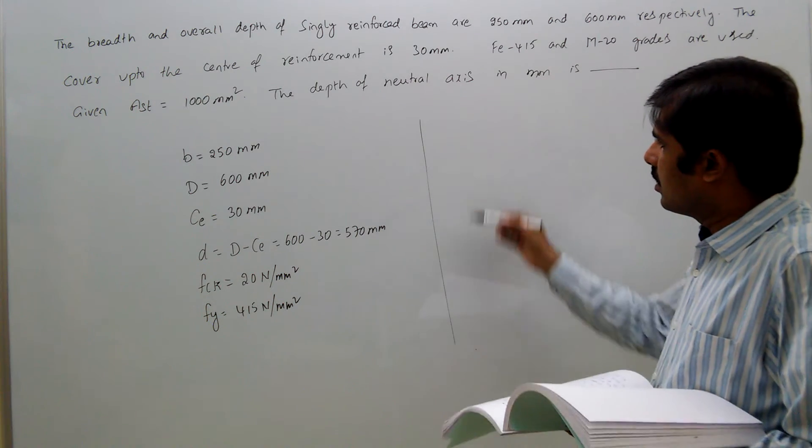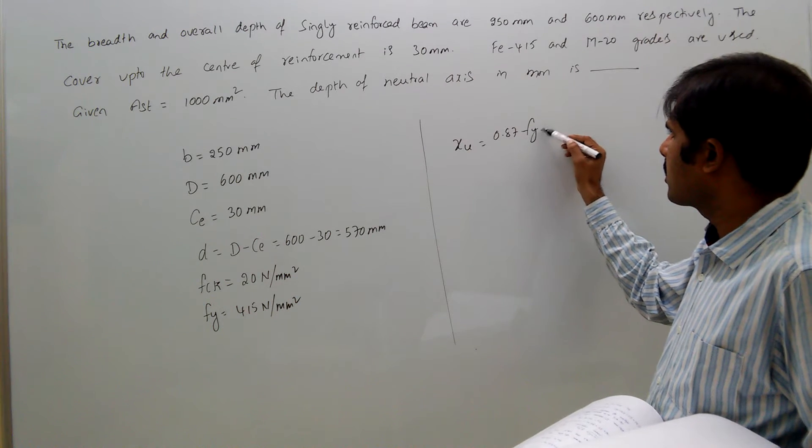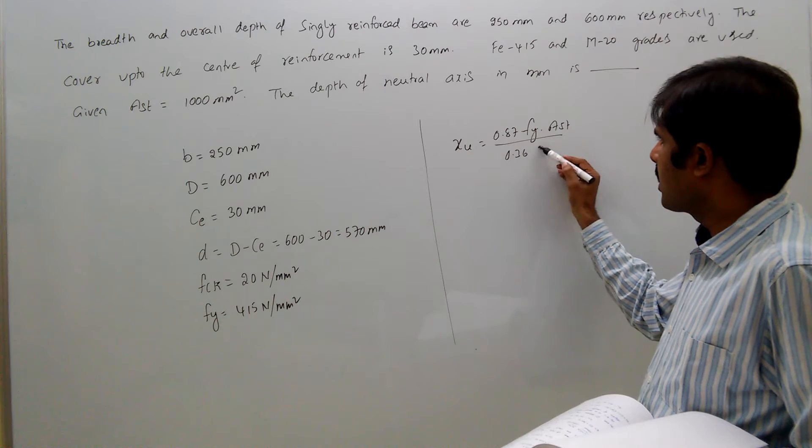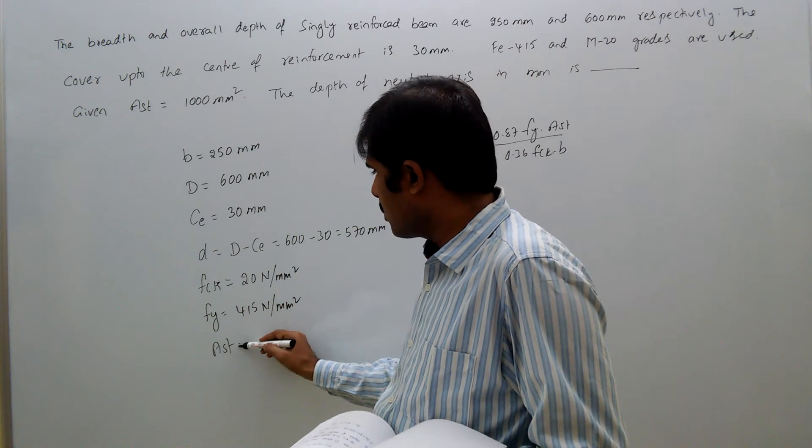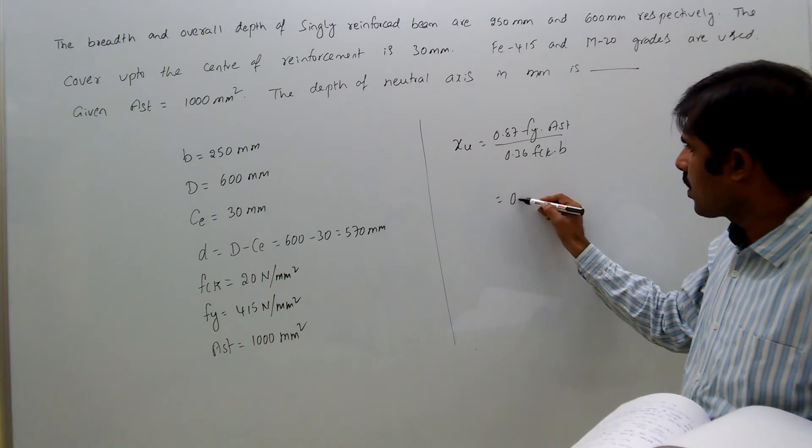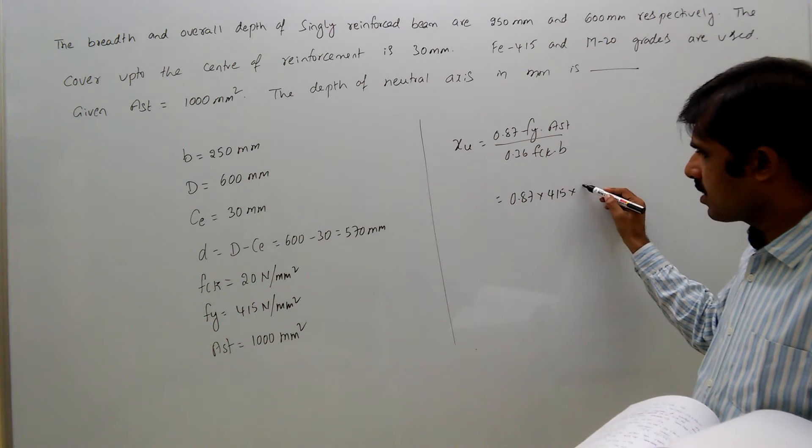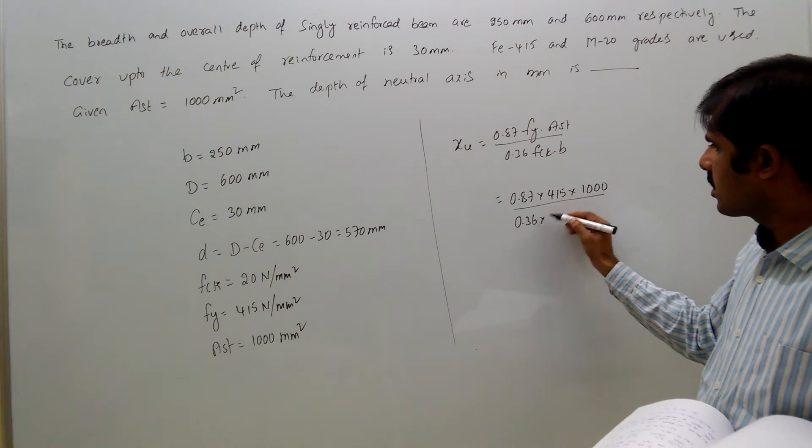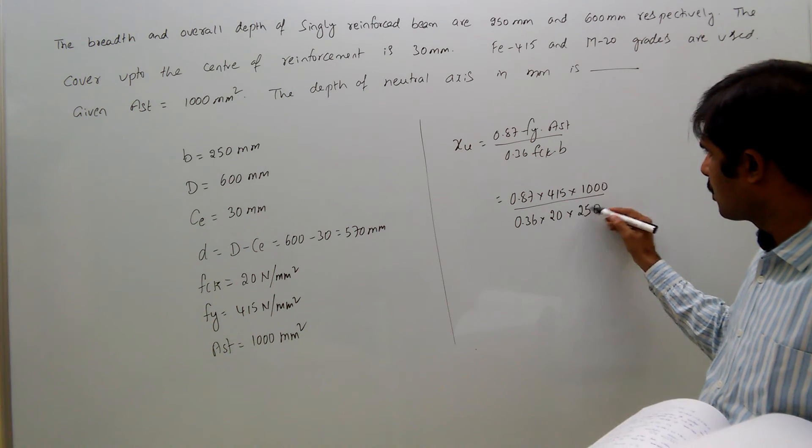Now the XU formula: 0.87 FY AST divided by 0.36 FCK B. Here AST is given as 1000 mm². So that equals 0.87 times 415 times 1000, divided by 0.36 times 20 times 250.